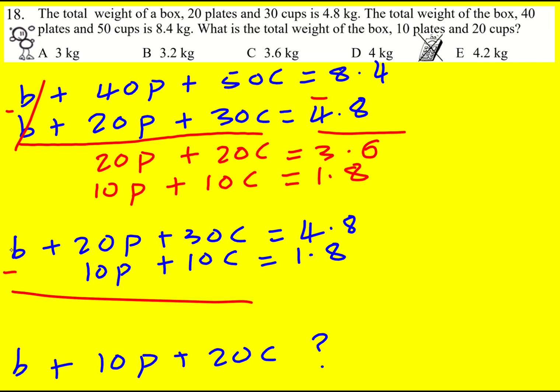So when I minus them I'm going to end up with B, I'm going to end up with 10P and 20C. So it's simply going to be 4.8 minus 1.8 and the answer is 3.